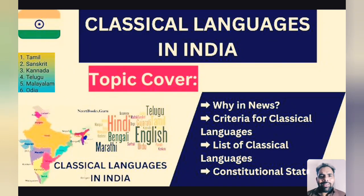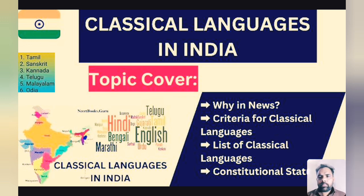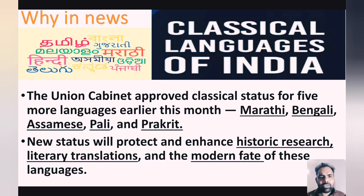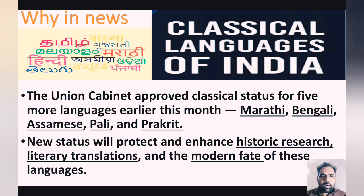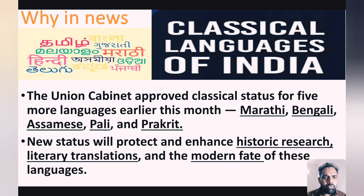In this article, we will discuss what are classical languages of India and what are the criteria for classical language status. The Union Cabinet approved classical status for five more languages earlier this month: Marathi, Bengali, Assamese, Pali, and Prakrit. This new status will protect and enhance historical research, literary translations, and the modern development of these languages.